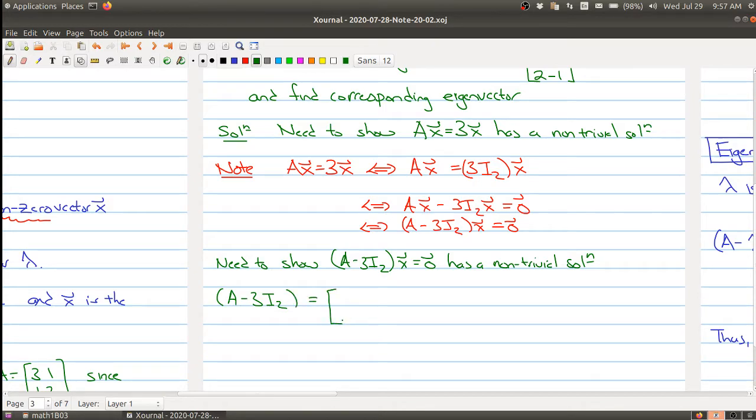First of all let me show you what A - 3I₂ is. Well you take your matrix A which was [2, 2; 2, -1] and now we're subtracting [3, 0; 0, 3] and I get a new matrix which is now [-1, 2; 2, -4].